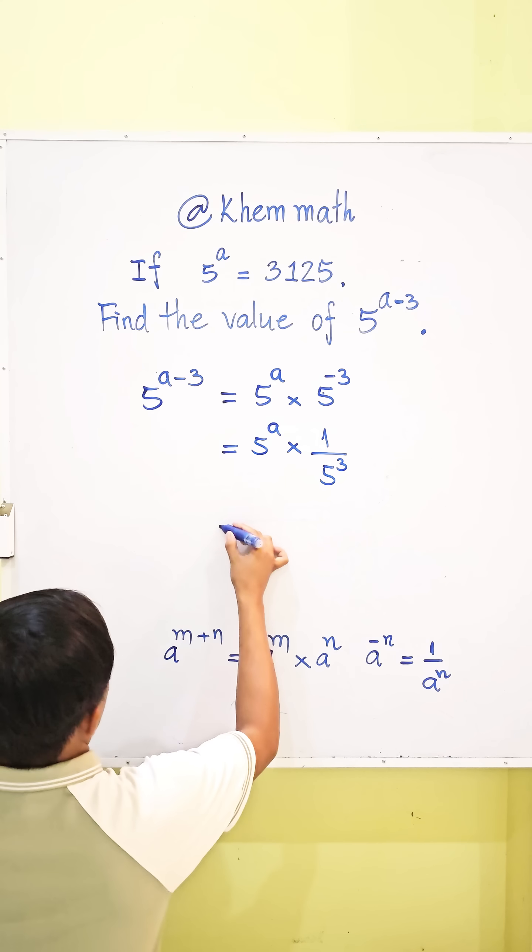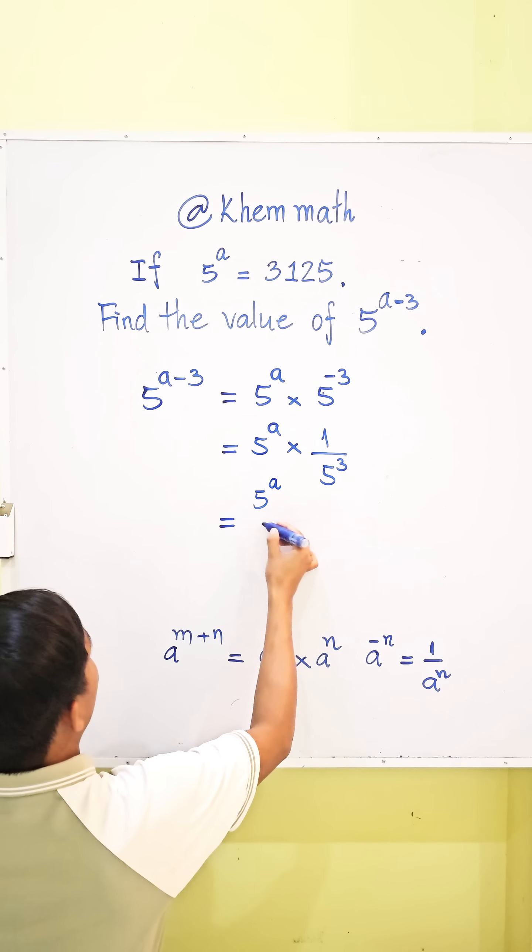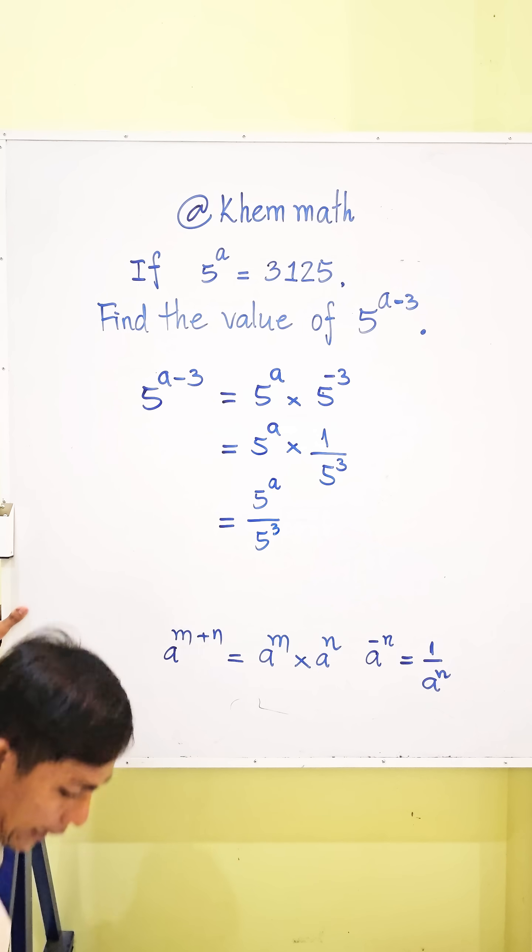So, here is, it's equal 5 power A and divided by 5 cube.